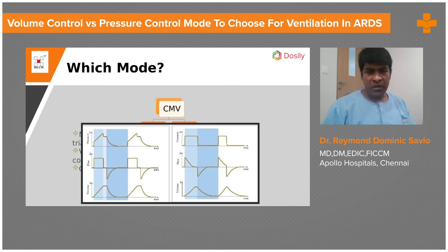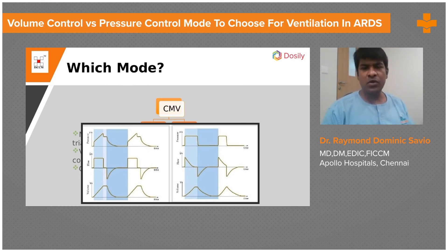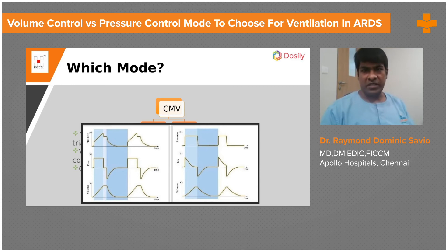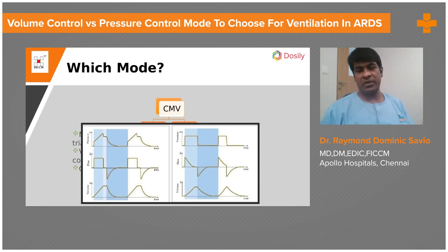Another common reason to prefer pressure control is in patients who are not paralyzed. Most of you will paralyze patients with moderate to severe ARDS, but in those who are not paralyzed, flow starvation or flow asynchrony is commonly seen and can disrupt ventilation. In volume control, a fixed flow is set regardless of what the patient wants, leading to flow asynchrony. In pressure control, the patient can determine their own flow — someone with high respiratory demand can get a higher flow from the ventilator. For this reason, many prefer pressure-controlled ventilation.